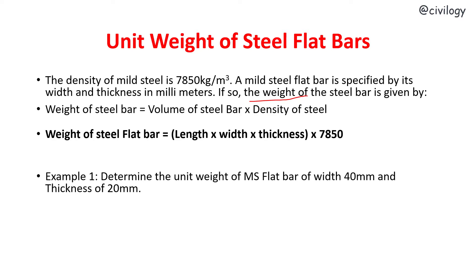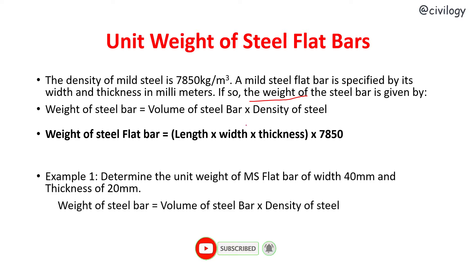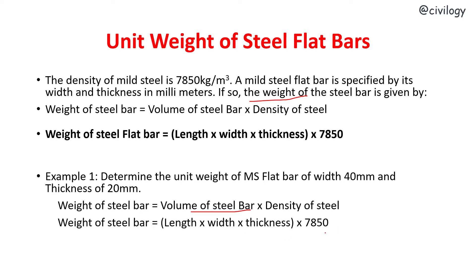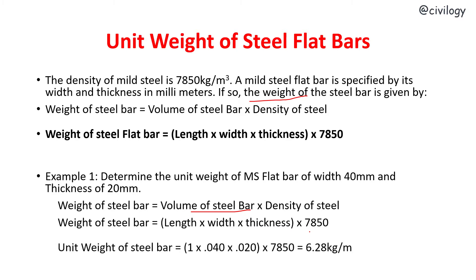Let's take an example: determine the unit weight of an MS flat bar of width 40 mm and thickness 20 mm. Weight = Volume × Density, where density is 7,850. Length is 1 meter, width is 0.04 m, and thickness is 0.02 m. The final answer is 6.28 kg per meter.